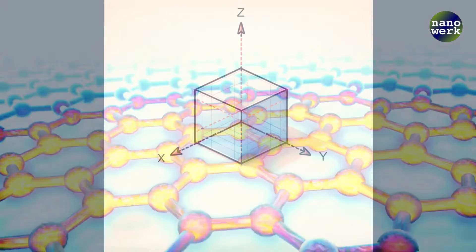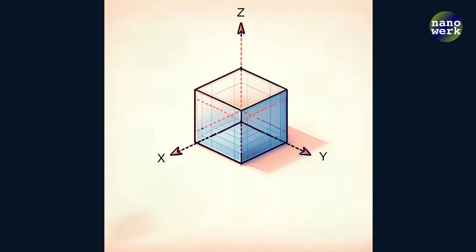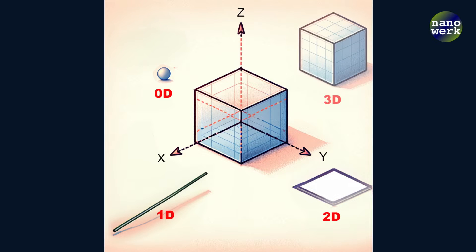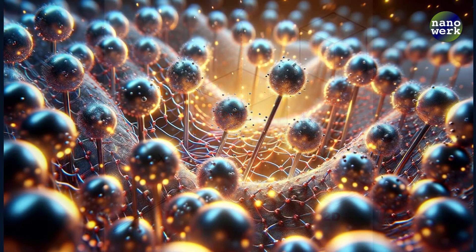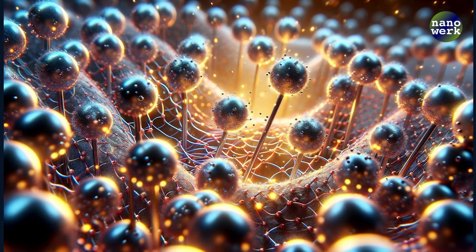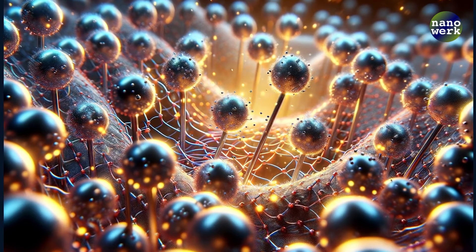Let's circle back to the intriguing concept of dimensionality itself. From the zero-dimensional quantum dots where electrons are confined in all directions, to the one-dimensional nanotubes with linear pathways, and two-dimensional sheets like graphene, each dimension brings its own set of unique and remarkable properties. These nanomaterials challenge our traditional notions of size and space.